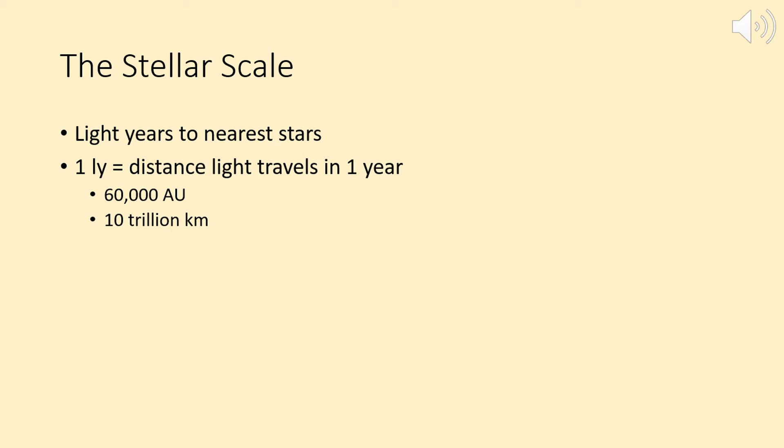We're not going to make a stellar scale model here, but it's good to know that the nearest stars to our solar system are about 4.2 light years away. If we use the same scale we did for our solar system, that nearby star would be about 2,000 kilometers away.